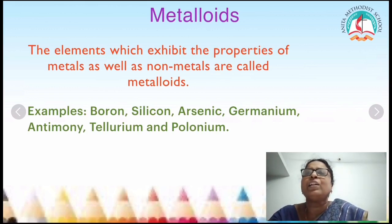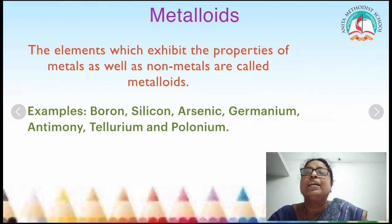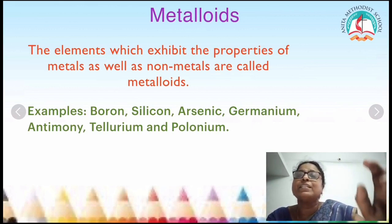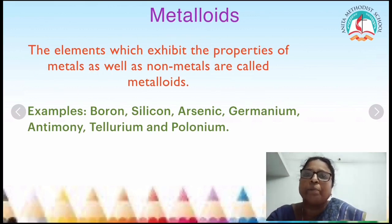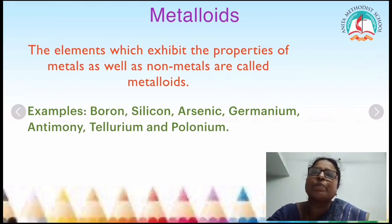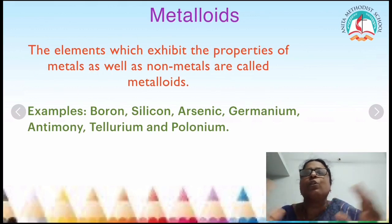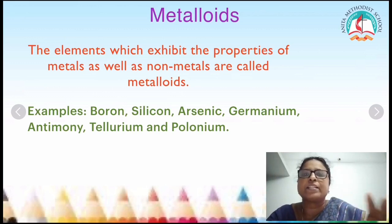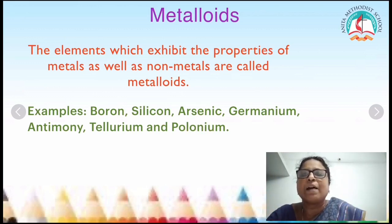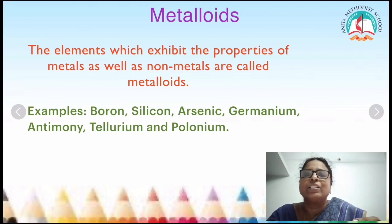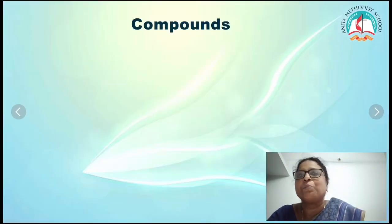Nitrogen is used for the manufacturing of ammonia. Now metalloids: elements that exhibit the properties of both metals as well as non-metals are called metalloids. Examples include boron, silicon, arsenic, germanium, antimony, tellurium, and polonium.